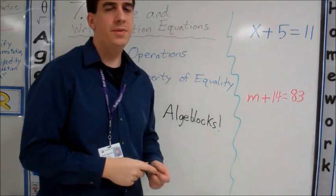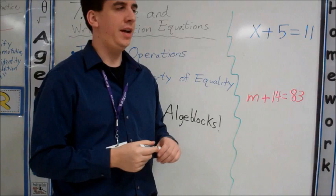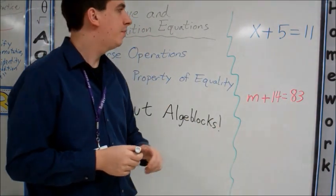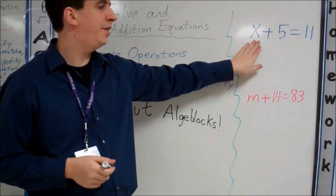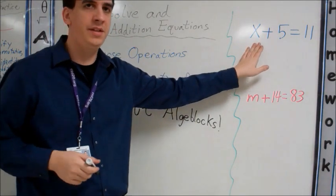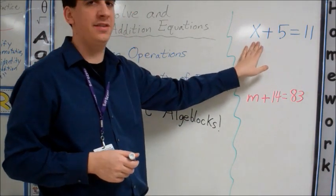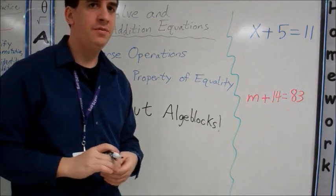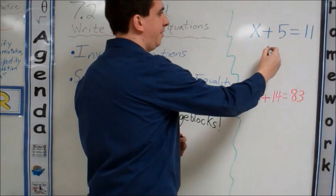Now that we've had some practice with algebra blocks, we're going to practice doing these by hand. X plus 5 equals 11. Where is our variable at? It's over here on the left side of the equation. Remember, we need to isolate that. We need to get it by itself. What did we say the inverse of addition was? Subtraction. Let's subtract 5.